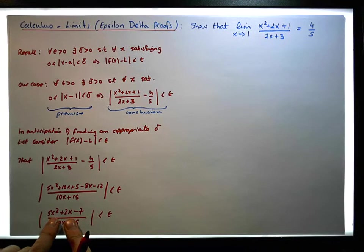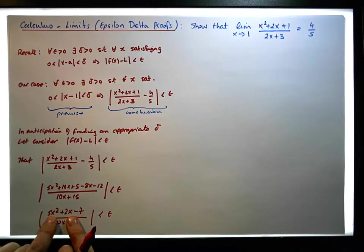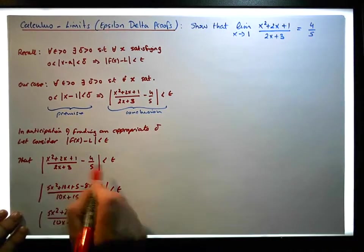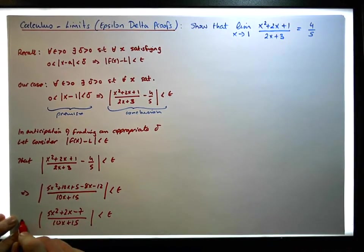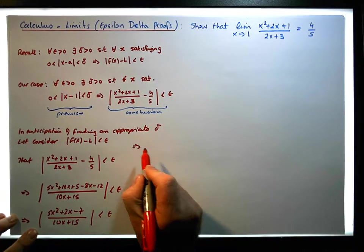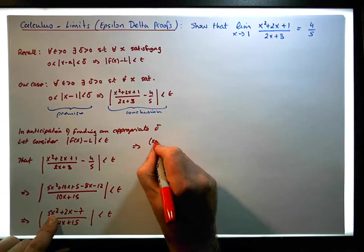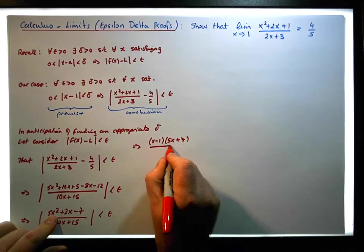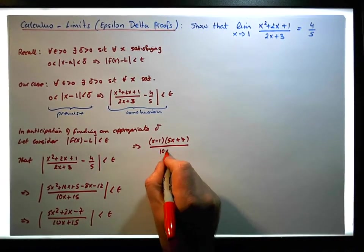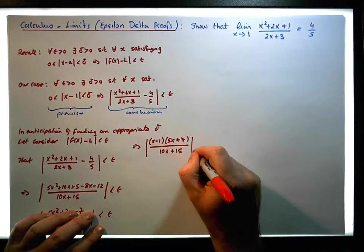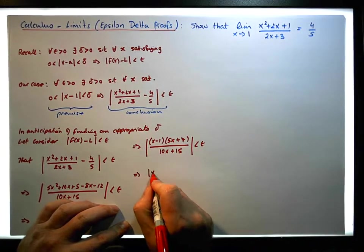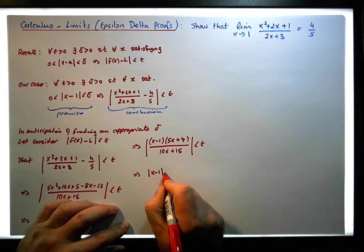We can factor this quadratic — using the rational root test to find appropriate roots — and we end up with x minus 1 times 5x plus 7, all over 10x plus 15. The absolute value of that is less than epsilon, and using the laws of absolute values, this implies that the absolute value of x minus 1 times the absolute value of 5x plus 7.